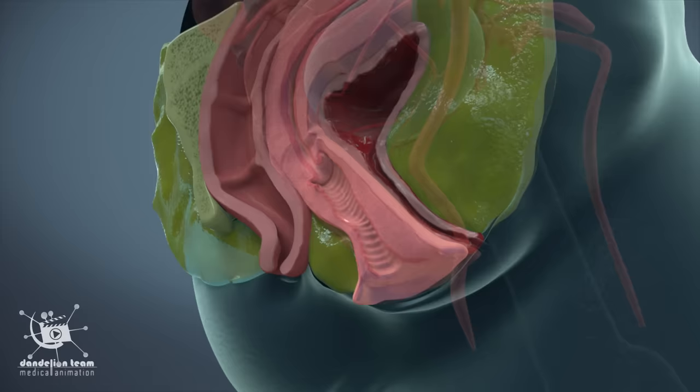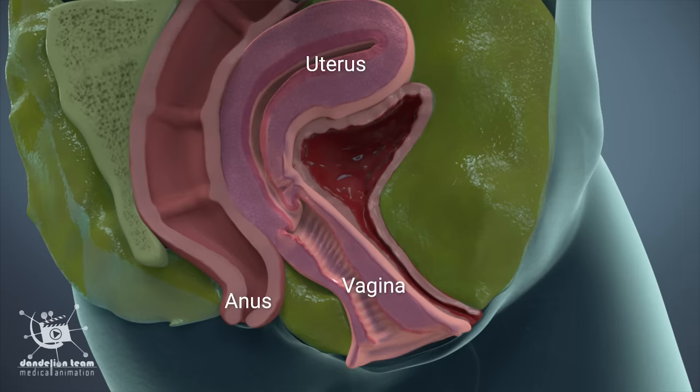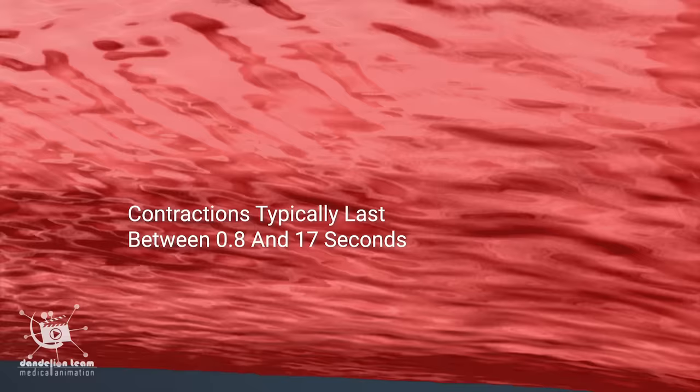Many women experience rhythmic muscle spasms in the vagina, uterus, and anus during or even after an orgasm. Contractions typically last between 0.8 and 17 seconds, but it can be different.